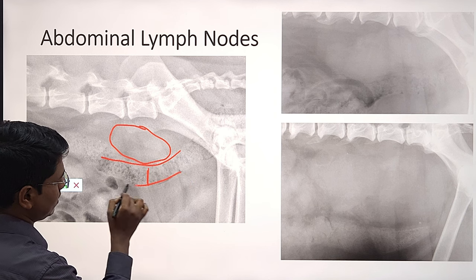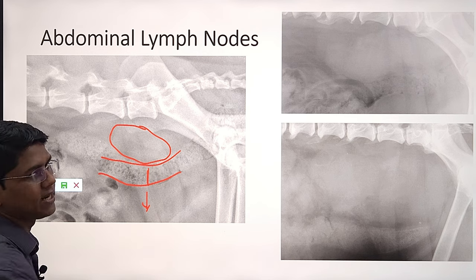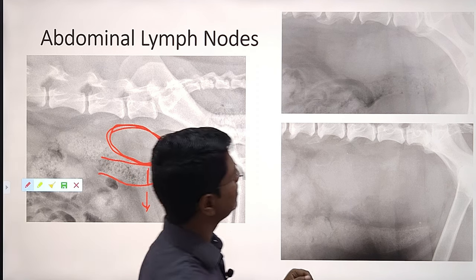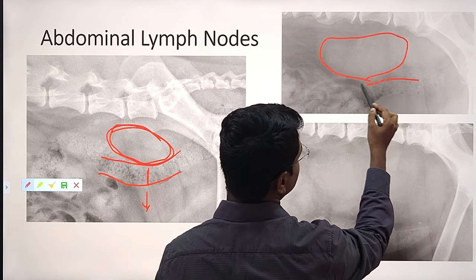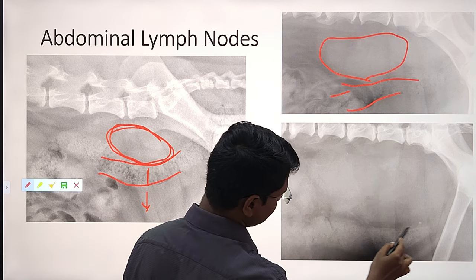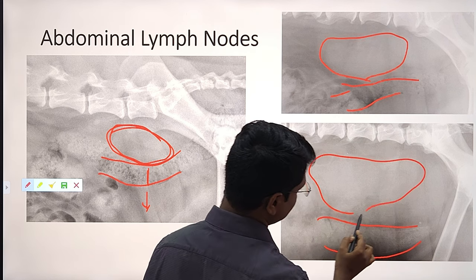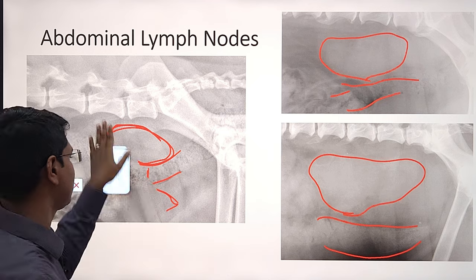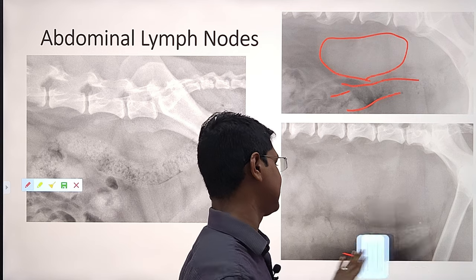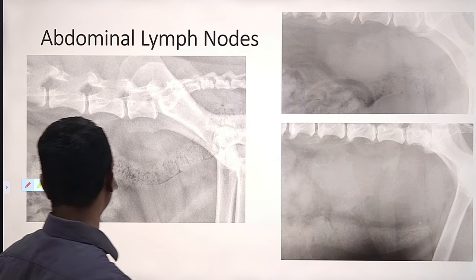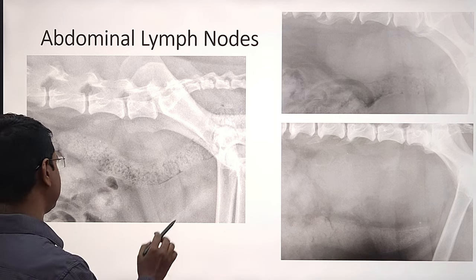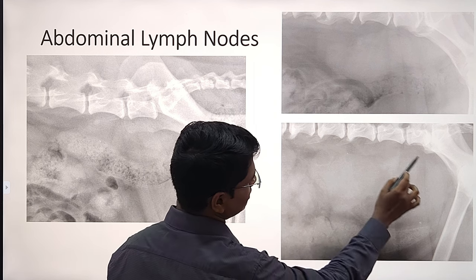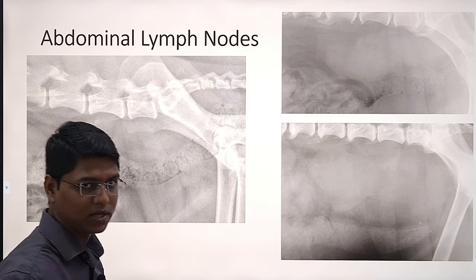When medial iliac lymph nodes are enlarged, you will find a soft tissue opacity mass. Here you can see this enlargement — it usually involves tumors. The descending colon has been pushed towards the ventral side. By this you can tell that the medial iliac lymph node is swollen. In other pictures, this is soft tissue opacity and the descending colon is slightly pushed. Here the descending colon is further pushed — this is a very big soft tissue opacity tumor of the medial iliac lymph node. Remember its position just ventral to L6 and L7 — when enlarged, the descending colon will be pushed ventrally.